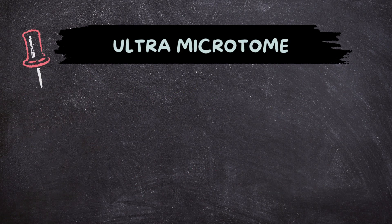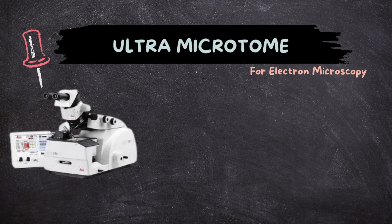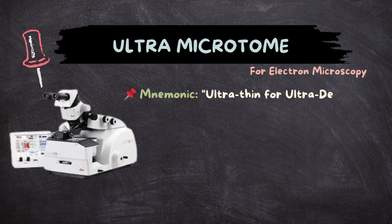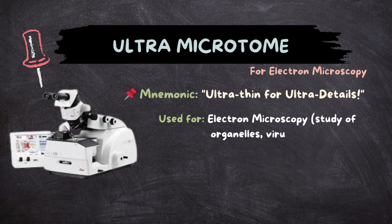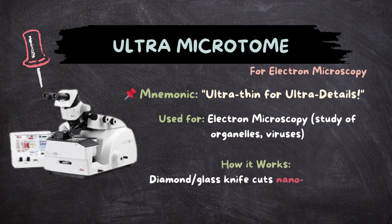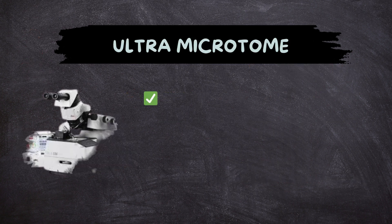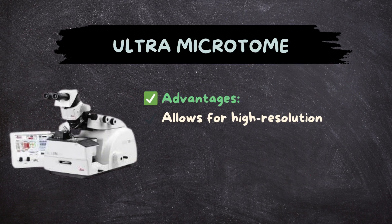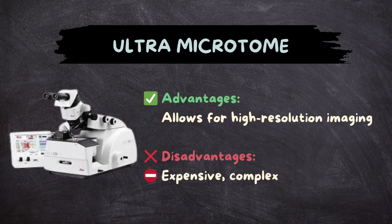Ultra Microtome — for electron microscopy. Mnemonic: 'Ultra thin for ultra details.' Used for electron microscopy and the study of organelles and viruses. A diamond or glass knife cuts nanometer-thin sections of 50 to 100 nanometers. Advantages: allows for high-resolution imaging. Disadvantages: expensive and complex.